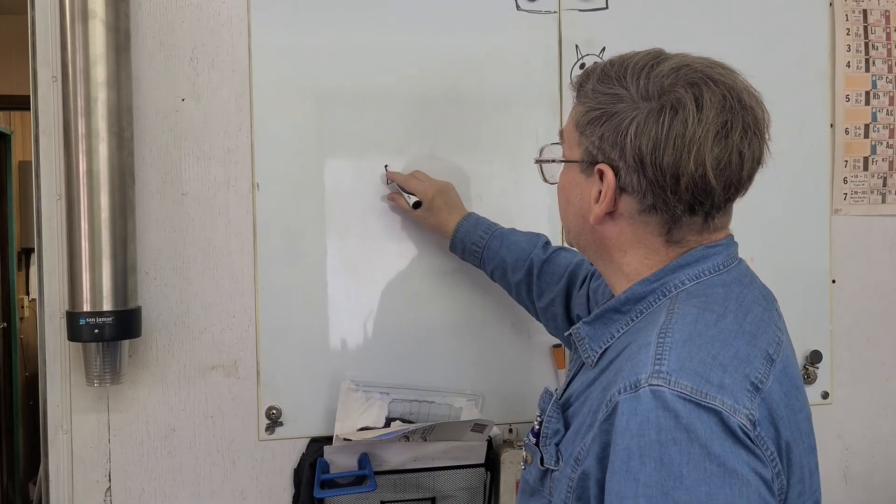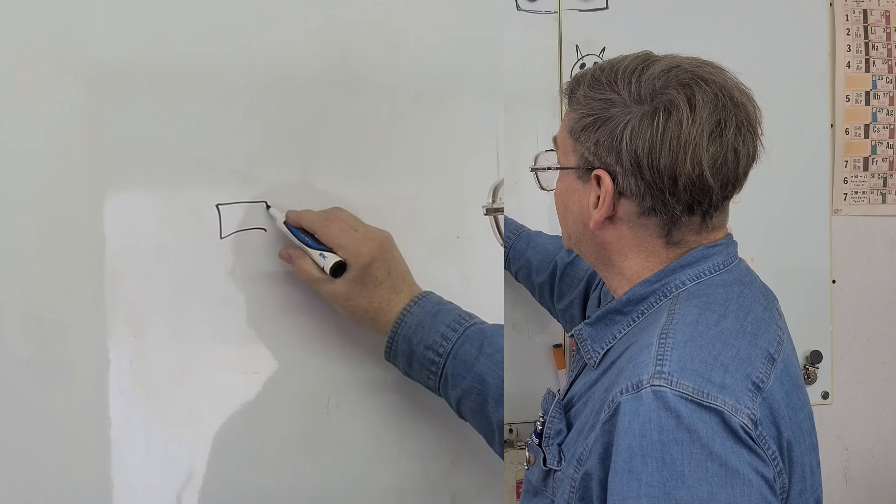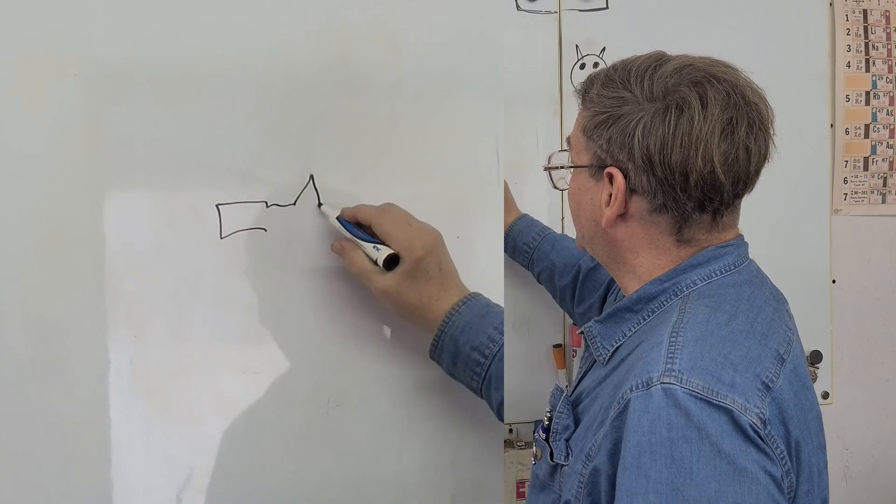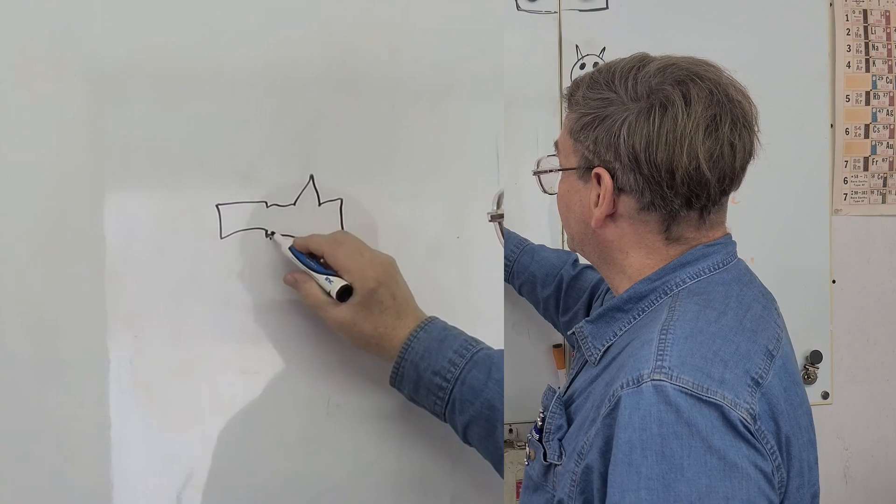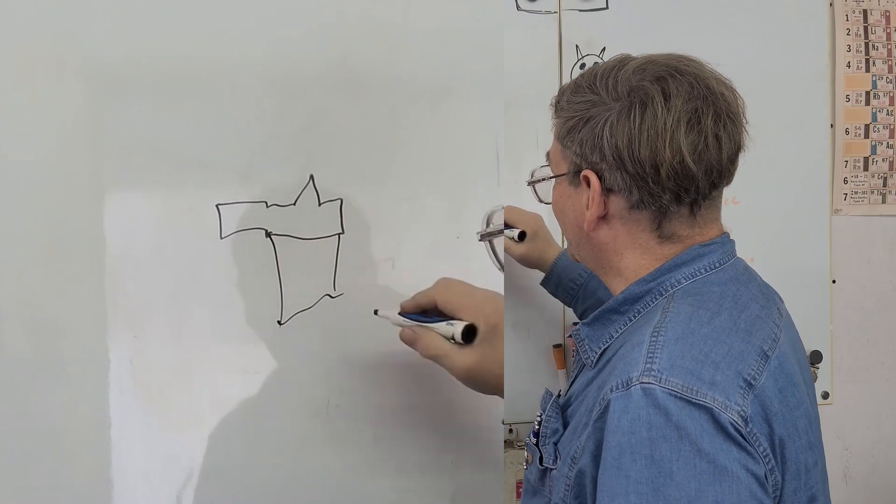Okay, we have a lathe bed, something like this, got a V-way, comes on over, and this part here goes on down into the rest of the machine.